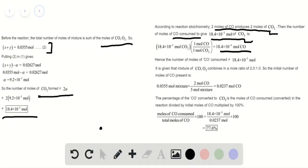It is given that the mixture of carbon monoxide and oxygen combined in a molar ratio of 2 to 1. The initial number of moles of carbon monoxide can be determined, which turns out to be 0.0237 moles.